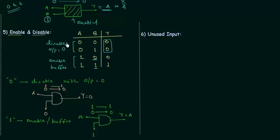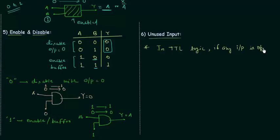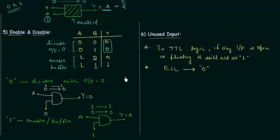Now we will move to the last point, that is unused input. Before that, two important points. First: in TTL logic (Transistor-Transistor Logic), if any input is open or floating, it will act as 1. This is very important and in competitive exams most problems will come on this concept. Second: in ECL logic, if any input is open or floating, it will act as 0.